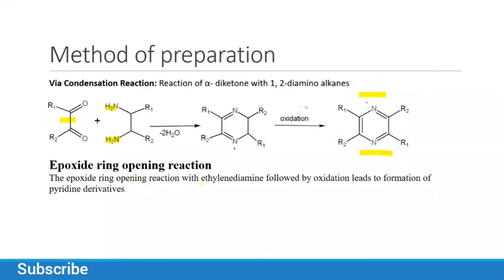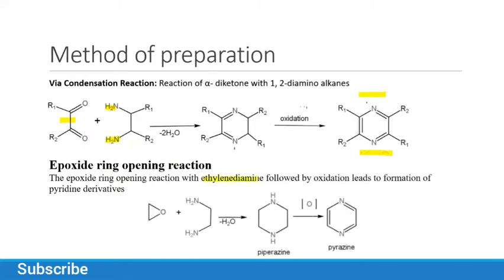Pyrazine can also be prepared by epoxide ring opening reaction. The epoxide ring opening reaction with ethylene diamine, followed by oxidation, leads to the formation of a pyrazine derivative. You open the epoxide ring and it reacts with ethylene diamine. With the removal of a water molecule, we get an intermediate product, and oxidation of this intermediate product leads to pyrazine as the final product.